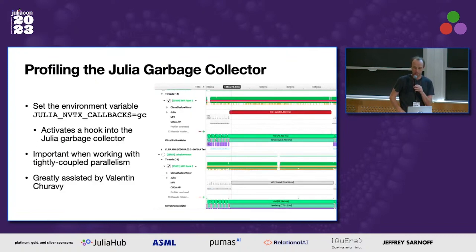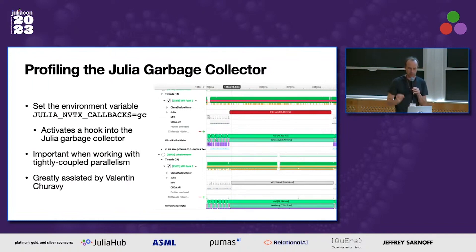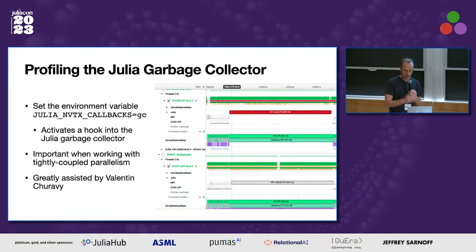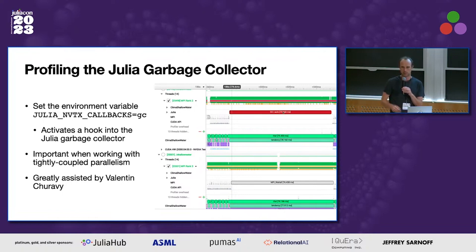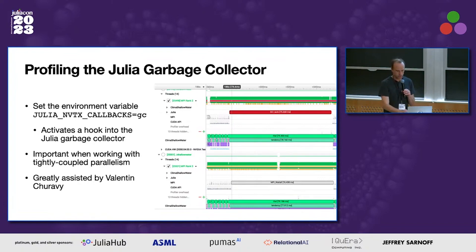I mentioned you can profile the Julia garbage collector. We build a small library that hooks into the Julia GC, which triggers when it starts and stops. If you set the relevant environment variable, you can also activate it manually. Whenever the garbage collector is invoked, it will trigger a range and show up in the profiler. The reason I built this was to see when the GC was being invoked in MPI processes. You can see here: all these processes are running, then everything stops — one process is stuck in MPI_Waitall because it's waiting on communication from another process that is doing a GC. Many thanks to Valentin for pointing out that hook.